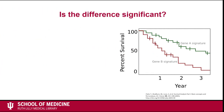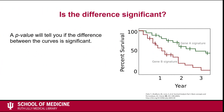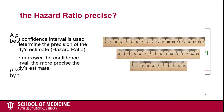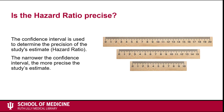A hazard ratio's p-value is used to determine if the difference between the survival curves is statistically significant. Typically, the p-value should be less than 0.05. Log rank tests provide p-values. The confidence interval is used to determine the precision of the hazard ratio.